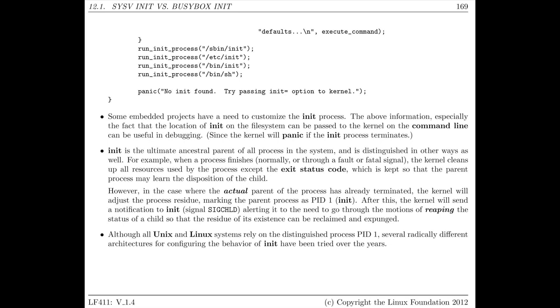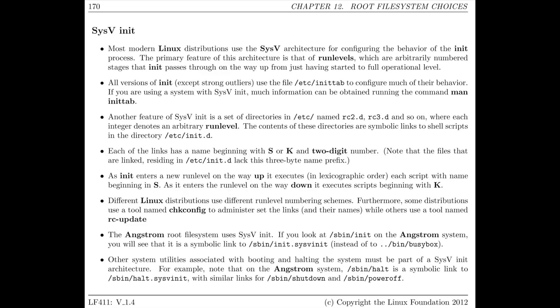There are a number of different options when it comes to the initialization process, but we're only going to cover two of them. The first one is called System5Init, and it comes from the old Unix days. It's based on a file called /etc/inittab, which specifies all the configuration as to what happens in different situations. For System5Init, all the different states are built into what's called a run level. Run level zero is halt, run level one is single user mode, run level two is multi-user mode, and so on up until run level six, which is reboot.